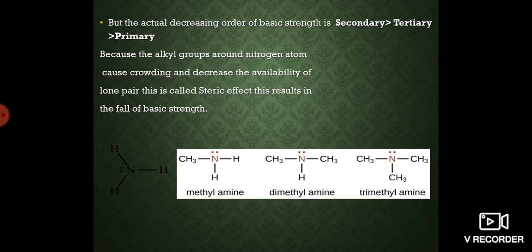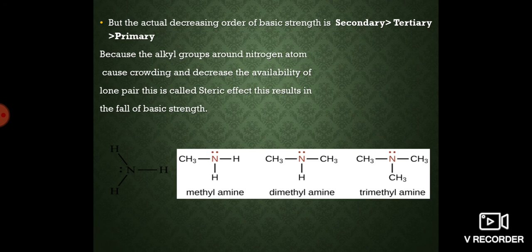However, the actual decreasing order of basic strength is: secondary > tertiary > primary, because the bulky alkyl groups around nitrogen cause crowding, decreasing the availability of the lone pair. This is called the steric hindrance effect. In trimethyl amine, three methyl groups increase electron crowding around nitrogen, so the basicity falls. Therefore the actual order is: secondary > tertiary > primary > ammonia.